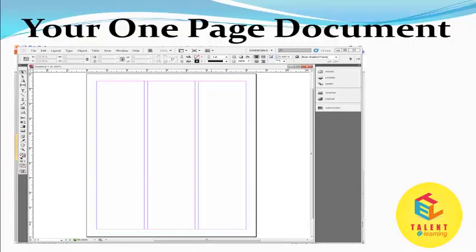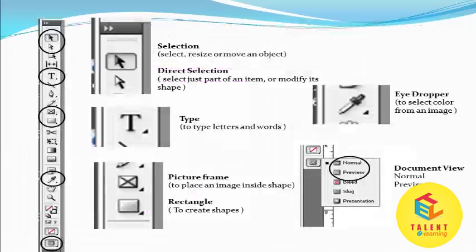Your one-page document is created like this. Here, first is the selection tool, second is the direction tool, this is the type tool, this is the picture frame, this is the rectangle tool, this is the eyedropper tool, and this is the document view — normal or preview.